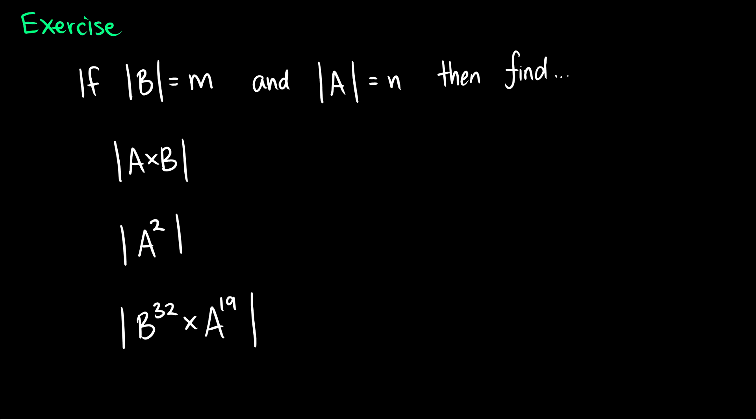And one last thing with cardinalities. Let's assume we have two sets. The size of B is M and the size of A is N. Then what is A cross B? What is the size of that? Well, that's going to be N times M, which is just NM. What about the size of A squared? Well, this would just be N times N, which is N squared.